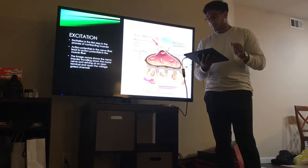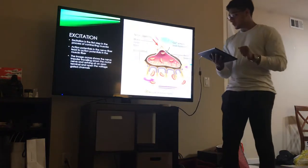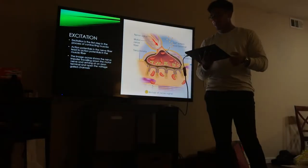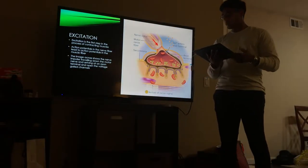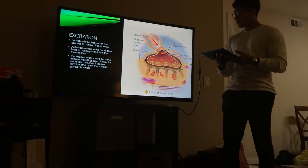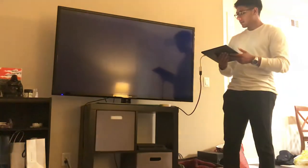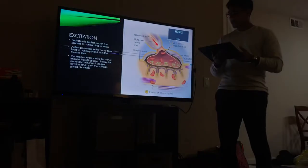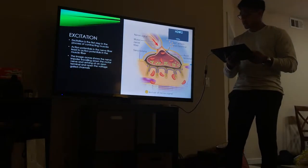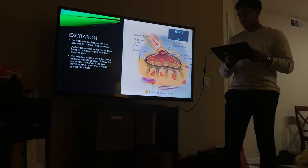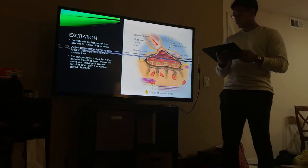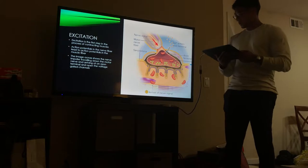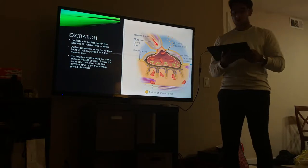Muscle and nerve cells are considered electrically excitable cells because their plasma membranes show voltage changes when stimulated. The electrical activity of these cells is based on the difference in concentration of ions in the intracellular fluid, with the two main ions being sodium and potassium.